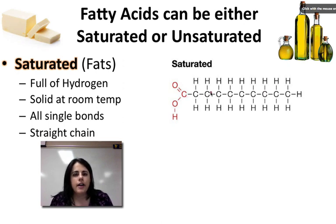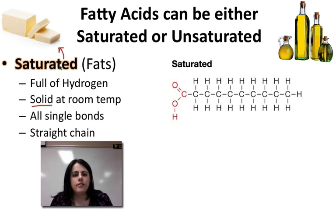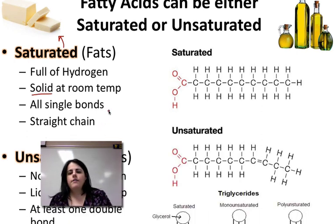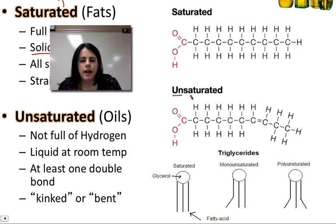Because if all the fatty acids are straight, they can pack very well together. When they pack very well together, they become solid at room temperature. So your saturated fatty acids create saturated fats like butter. The second type — unsaturated — means not saturated, not full of something. The thing they're not full of is hydrogen. You can see in this structure we actually have a space where we could probably fit a few more hydrogens if we really wanted to, but they're not there.